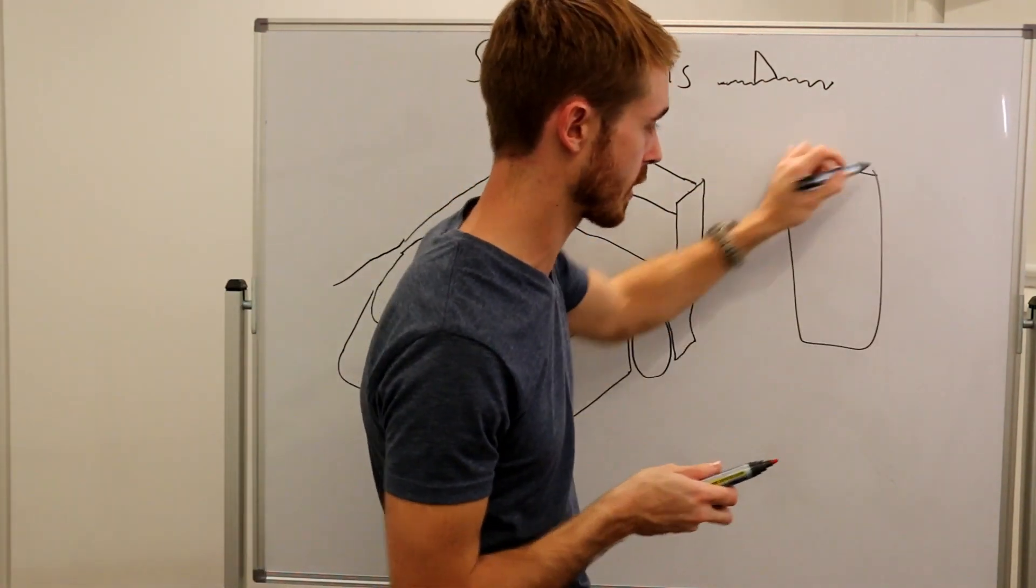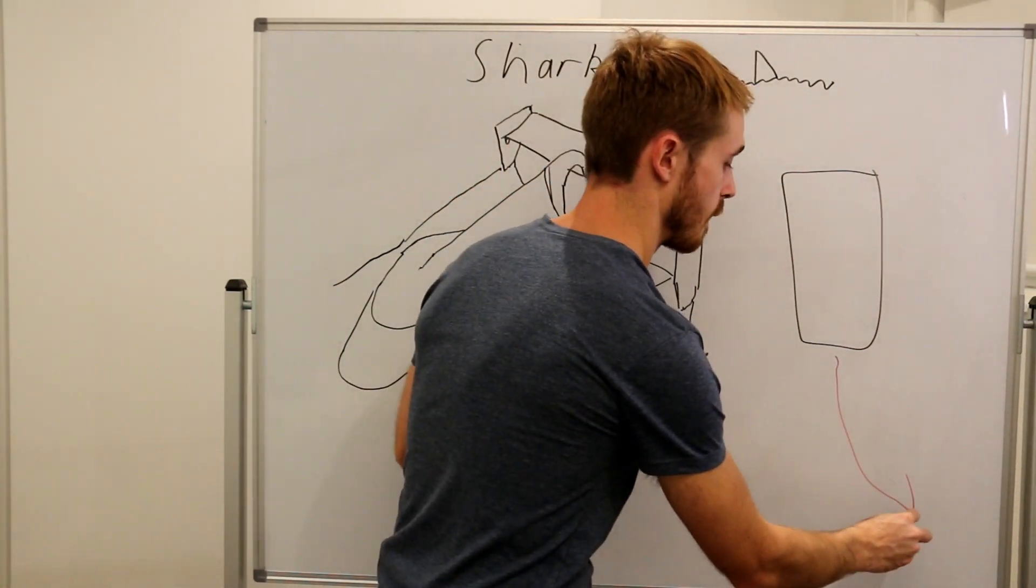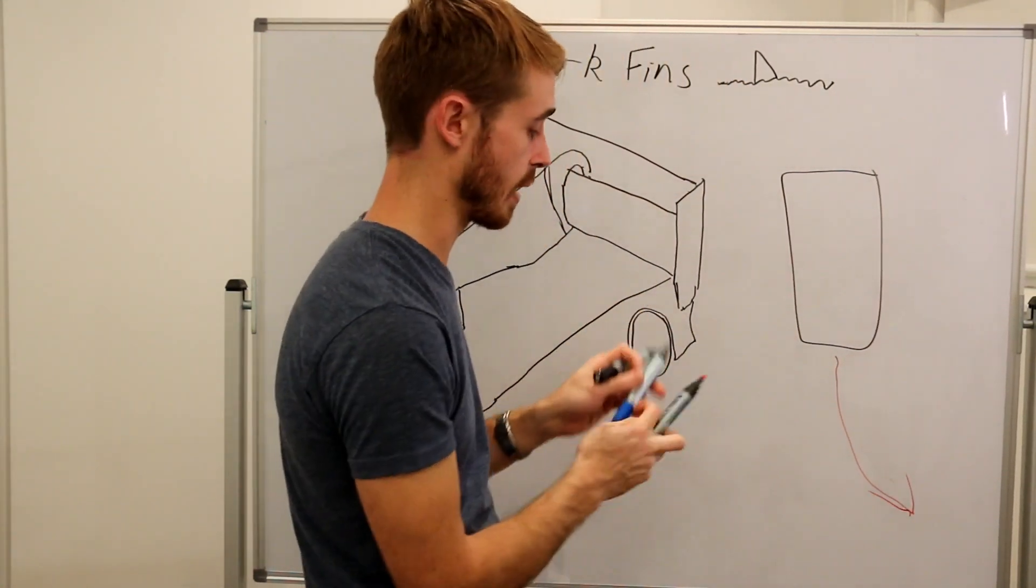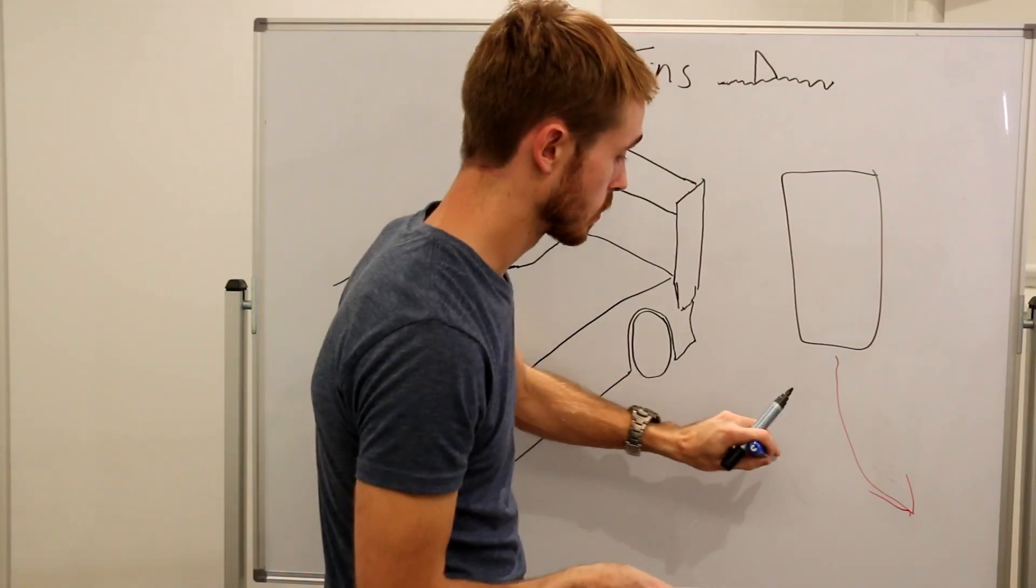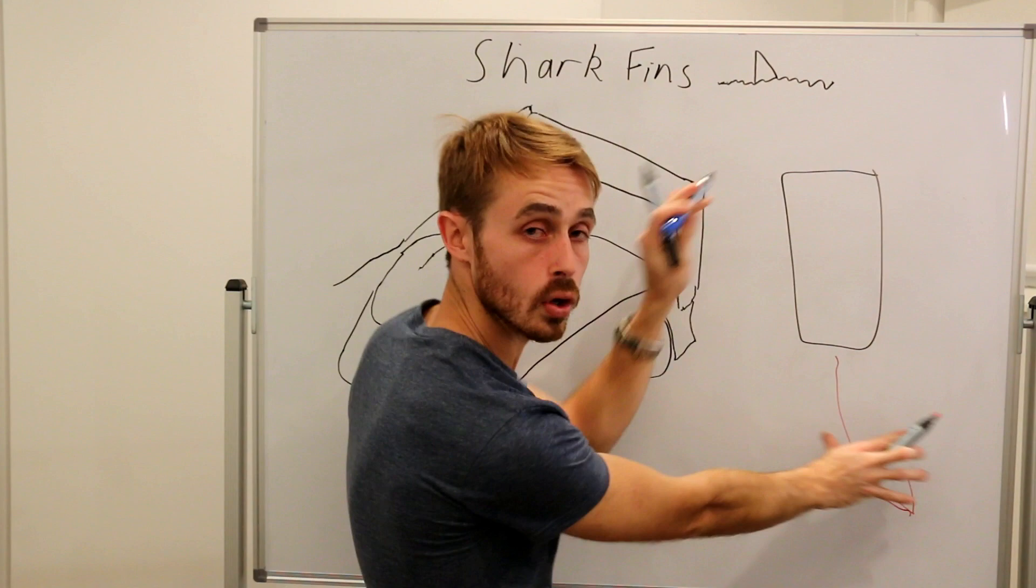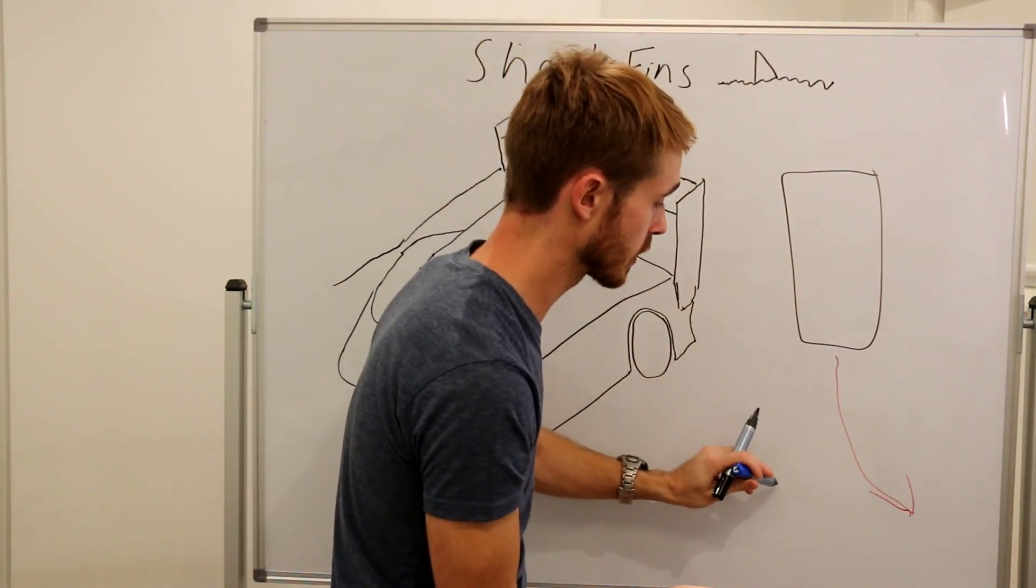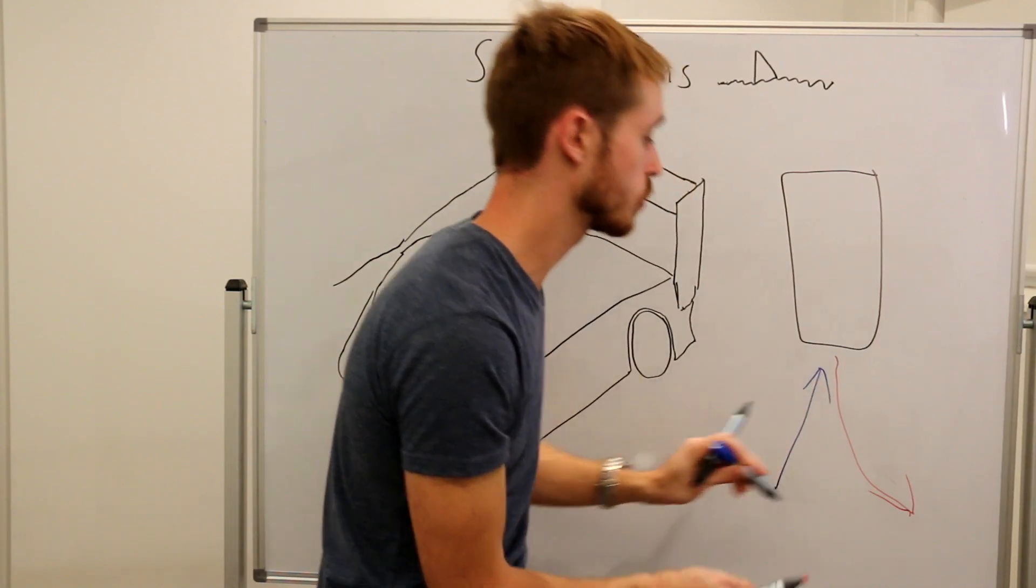Imagine if we look top down we have our car going along here, sorry for the crude drawing, and then we have the arc of our corner going along there. Our airflow will be coming along towards the car. The car, as it turns into a corner, is going to be at some angle of yaw, right? So our effective airflow that the car sees will be directed this way.